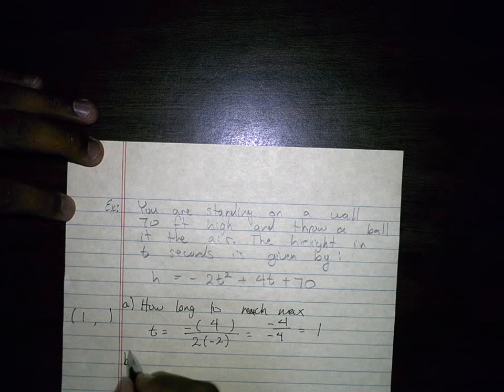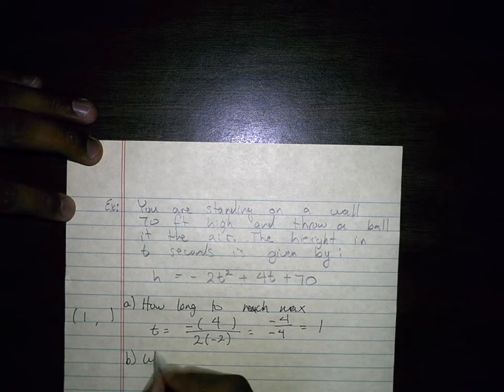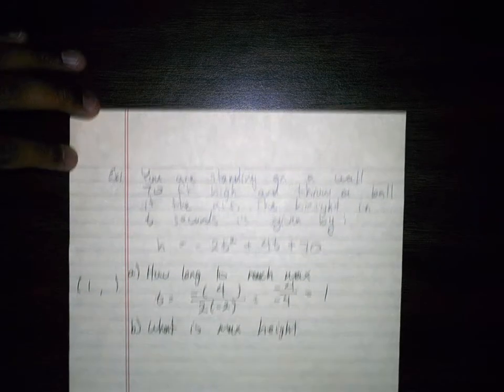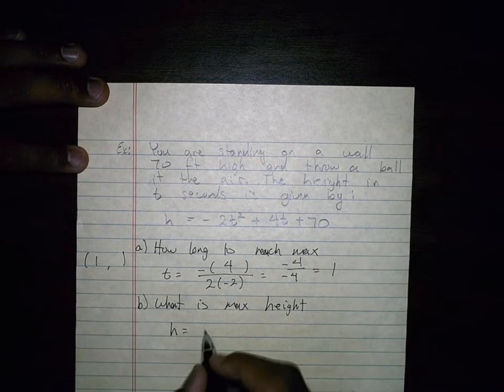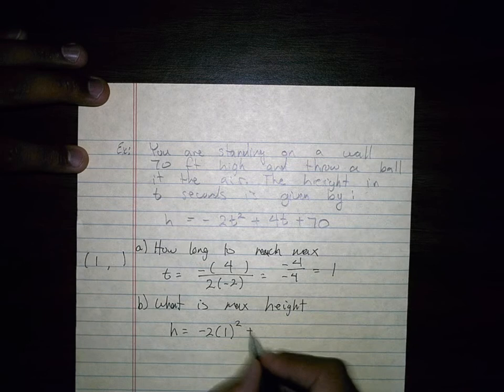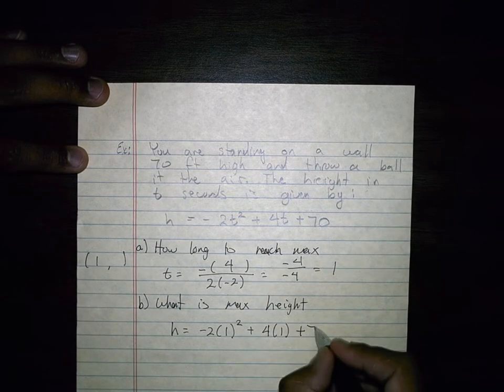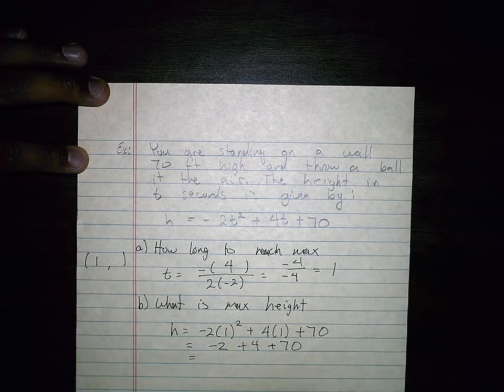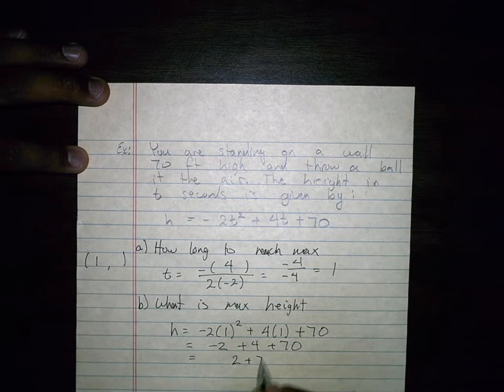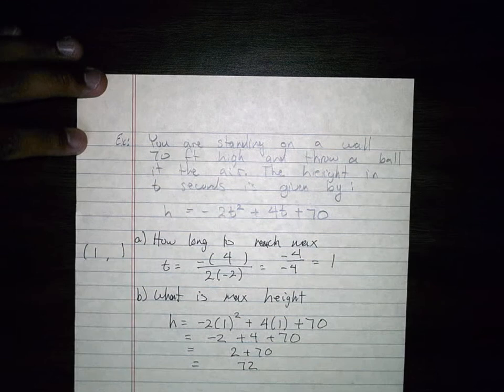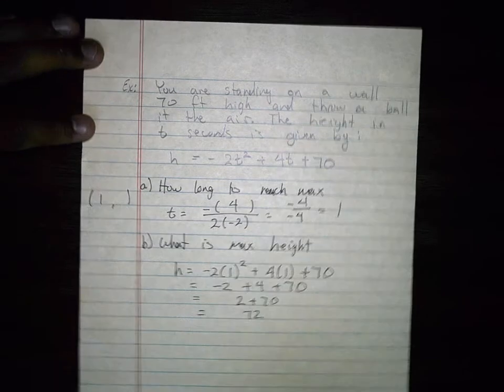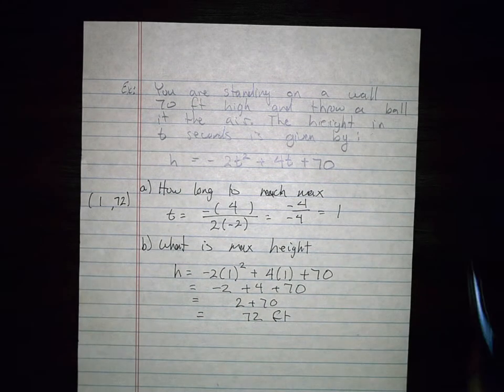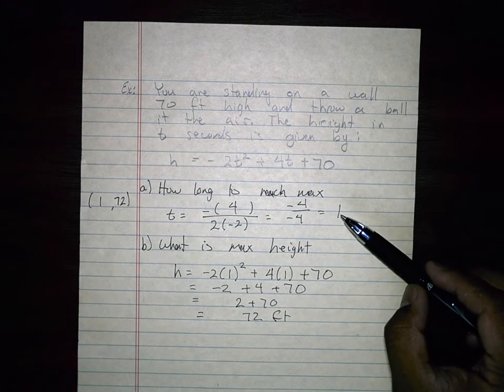Now let's go ahead and find B, which from the last question was, what is max height? So we're going to say h equals negative 2 times 1 squared plus 4 times 1 plus 70. So that equals negative 2 plus 4 plus 70, and we're looking at 2 plus 70, and that equals 72. So the max height was 72, right? Let's just say this was in feet. So it looks kind of weird because it only traveled for a minute, but you got to remember we started higher up.